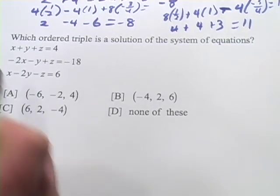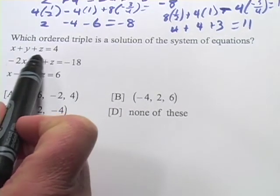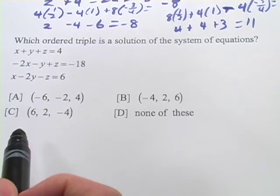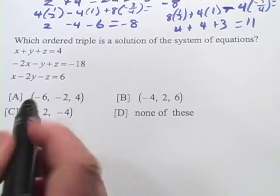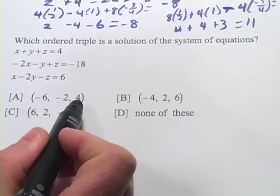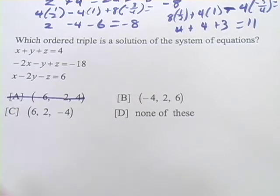So here, actually, this one has got a nice easy equation to start. X plus Y plus Z equals 4. So we know right off the bat that all three numbers added together are going to equal 4. So if you look at A, we can take that out right away, because negative 6, negative 2, and 4 does not add up to 4. So that one's out.